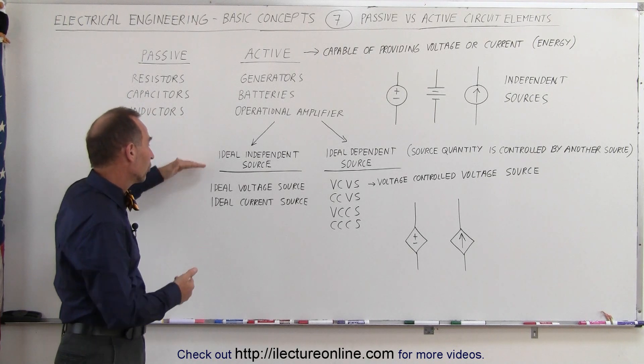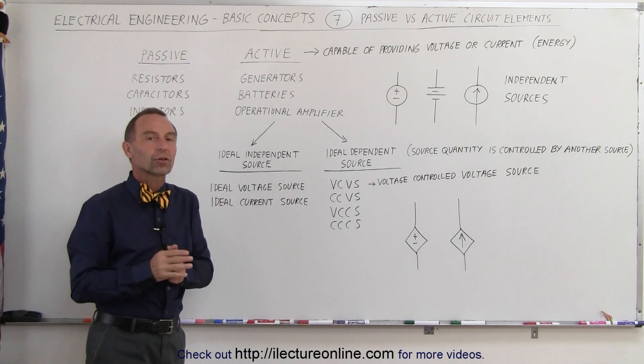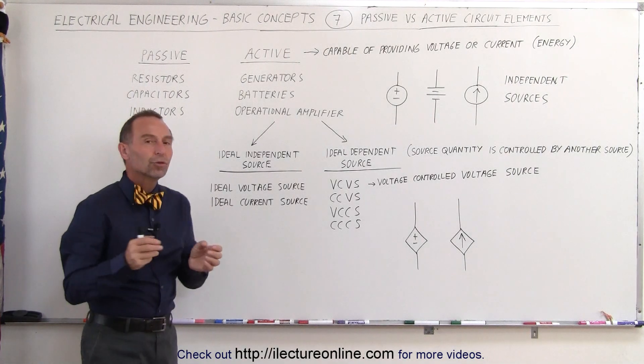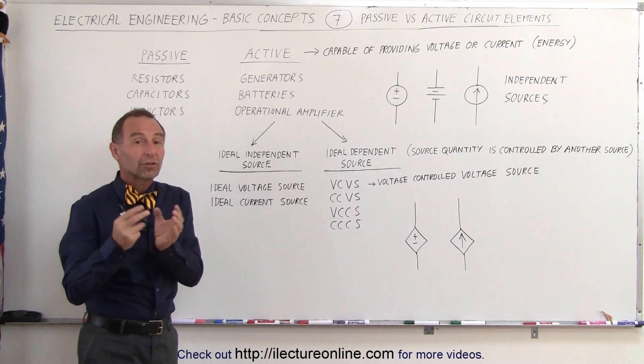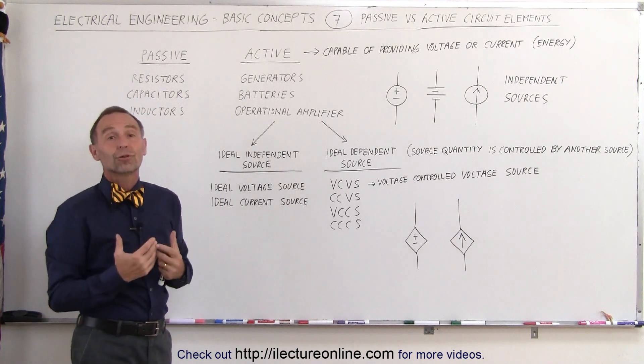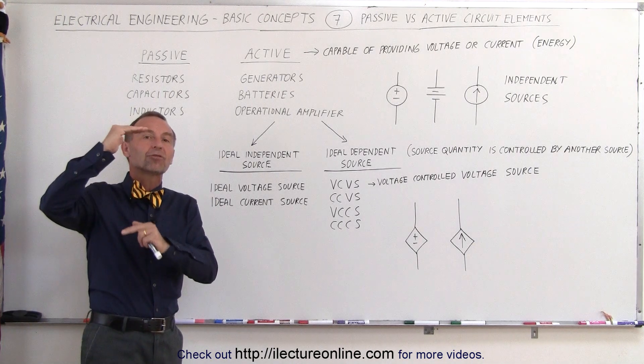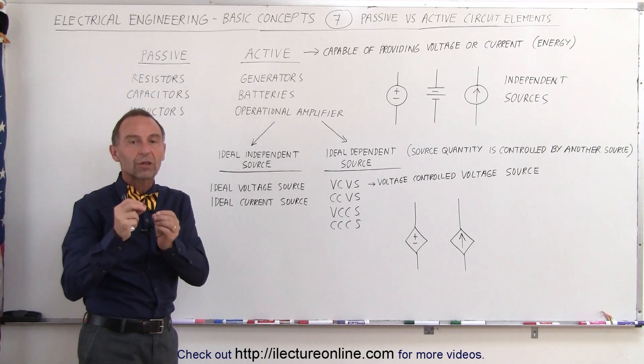Ideal independent sources can produce an ideal voltage or an ideal current independent of anything else in the circuit. They can provide as much current as a circuit can possibly draw, independent of how much current the circuit will draw. No matter how much it draws, they can produce all of it and yet provide the potential difference across the circuit. It will not drop.